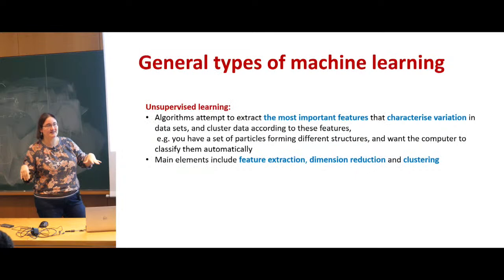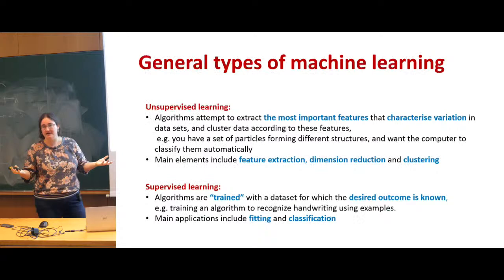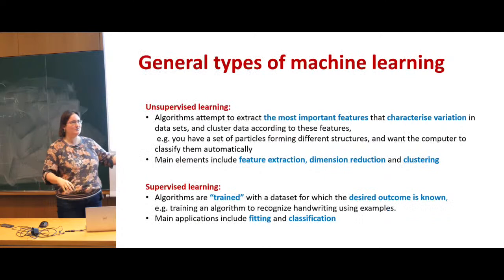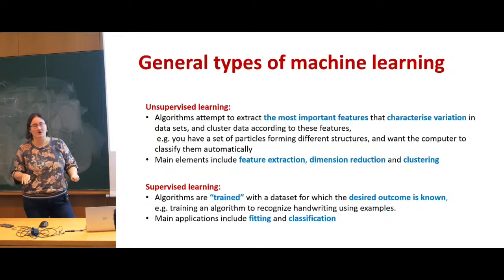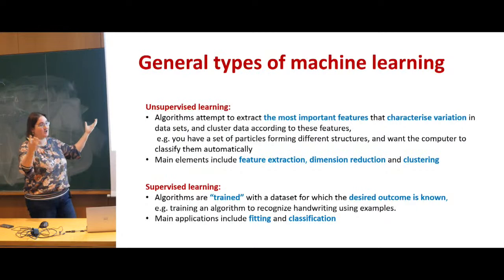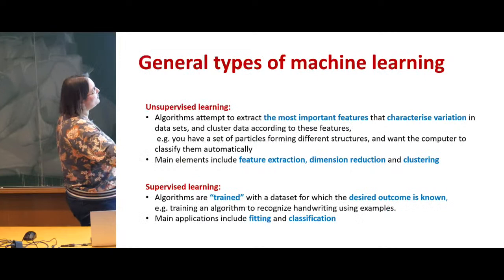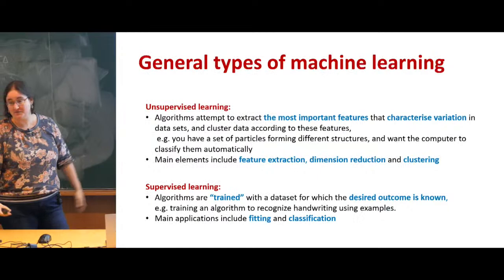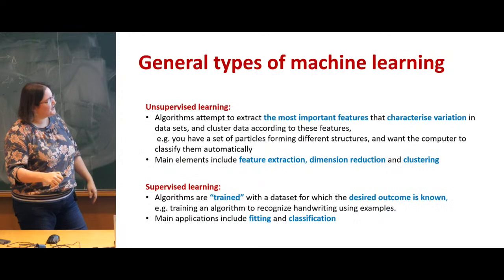Going to the non-experts in the room: if I look at machine learning in a general aspect and ask what are the kinds of things we might want to do with it, most of machine learning can be broadly broken up into two different kinds of directions. We talk about unsupervised machine learning, which is designed to try to figure something out for you in your system. If you have a system and would like to learn an order parameter, you want the algorithm to pick out the most important features, find the variations, and develop an order parameter.